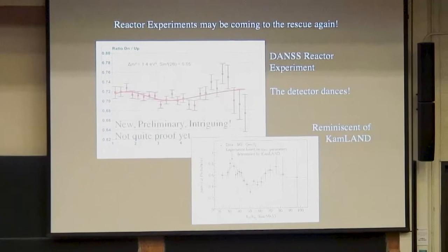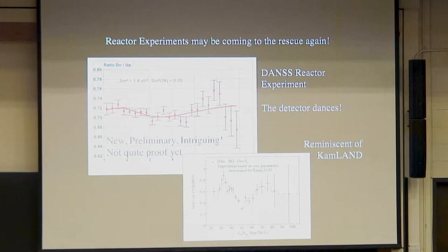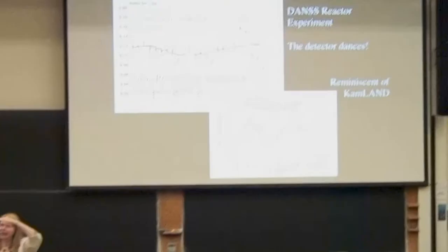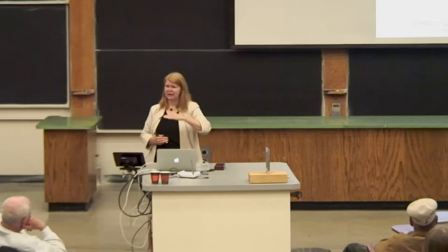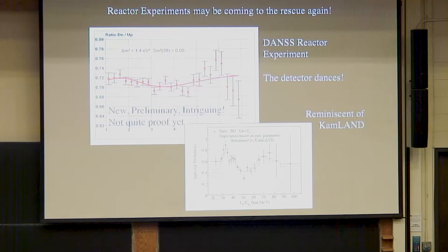At the Neutrino conference, we actually saw something like that. They showed a result that looks a little bit like a wiggle — from the DANCE experiment, which uses a reactor over a few kilometers' distance. The DANCE detector starts at one position, moves to the next position each day, and then back again — it does its little dance back and forth. If you look at the ratio of up to down, it actually shows a wiggle that looks a lot like what we are looking for. It's new, preliminary, intriguing — not quite proof yet — but I am really excited.